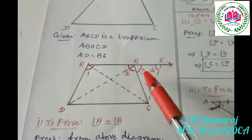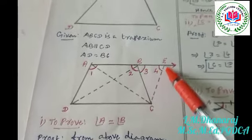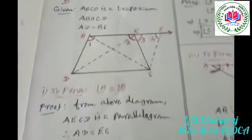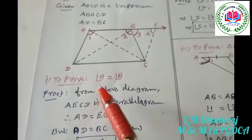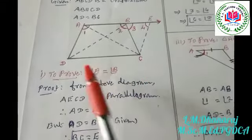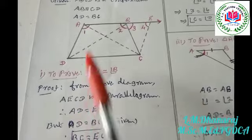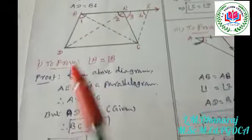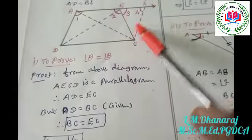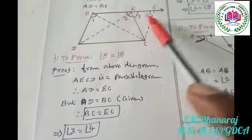We extend the line AB to point E, forming angle three. Then we join CE, making AD parallel to CE. This creates a parallelogram, from which AD is equal to EC. Since AD is equal to BC, we get BC is equal to EC, which means angle three is equal to angle four.